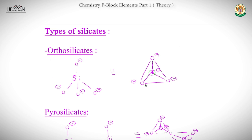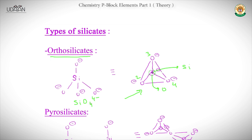Now we move towards the types of silicates. The first type is orthosilicate. Silicates are network polymers made up of silicon and oxygen. Orthosilicate consists of one silicon and four oxygens with a 4− charge, giving the formula SiO₄⁴⁻. From the top view it is a tetrahedral structure.